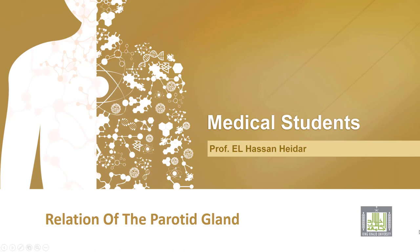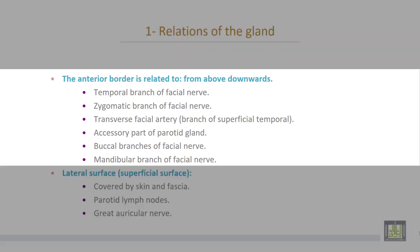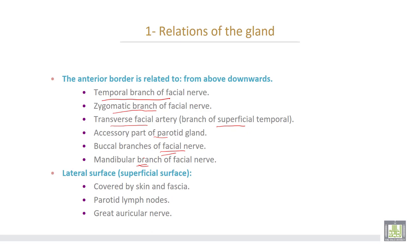Relations of the parotid gland. The anterior border of the gland is related to the following structures from above downwards: number one, temporal branch of the facial nerve; number two, zygomatic branch of the facial nerve; then transverse facial artery, which is a branch of the superficial temporal artery; then the accessory part of the parotid gland; then buccal branches of the facial nerve; then mandibular branch of the facial nerve.